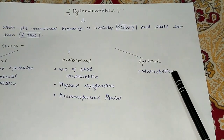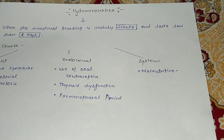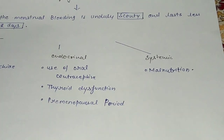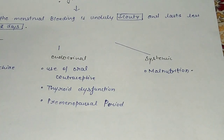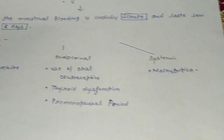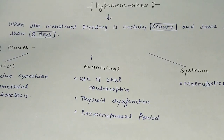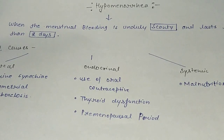The systemic cause is malnutrition. If patients do not have good nutrition, they will have less bleeding — scanty bleeding for very few days.